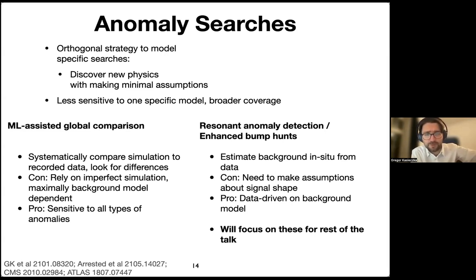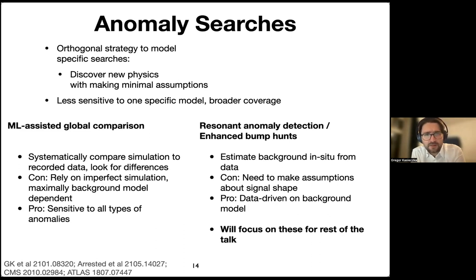One could systematically compare recorded data to simulation and look for differences. This has been done for a long time — known as the 'Sleuth' approach, also done by ATLAS under 'general searches' and by CMS under 'MUSiC: Model Unspecific Search in CMS.' These can be improved with machine learning. The big advantage is sensitivity to all types of anomalies without model assumptions; the big disadvantage is reliance on simulation quality.